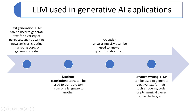The second use case is machine translation — LLMs can translate text from one language to another, like Google Translate, converting English to Hindi, English to Bengali, or Bengali to English using the transformer model. Other use cases include question answering, where the LLM gives answers to your questions, and creative writing, where it can generate poems, scripts, musical pieces, and emails.